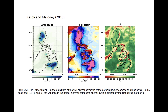The diurnal cycle is so pronounced over land in some places because convection is forced topographically. During the day, the land warms much faster than the ocean. As a result, a sea breeze circulation, driven by pressure gradients, develops. The pressure gradients drive flow onshore during the daytime and force convergence near the bases of steep terrain, which enhances convection in those locations.